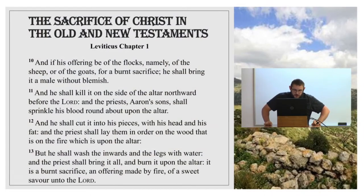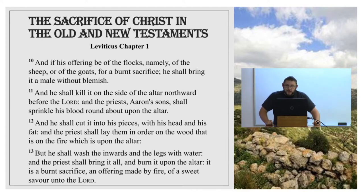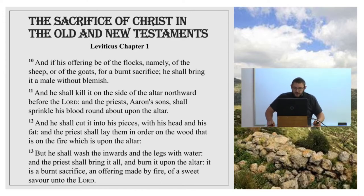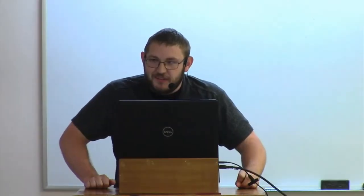The next set of verses is for the flock offering - sheep or goats. Verse 10: 'If his offering be of the flock, namely of the sheep or of the goats, for a burnt offering, he shall bring it a male without blemish.' Once again it has to be male, without blemish. One difference noted here is that it's to be killed on the north side of the altar. It is said that Calvary was north of Jerusalem, and he was definitely killed outside of Jerusalem, which indicates that like here, he was not killed right at the altar but past it, on the north side.